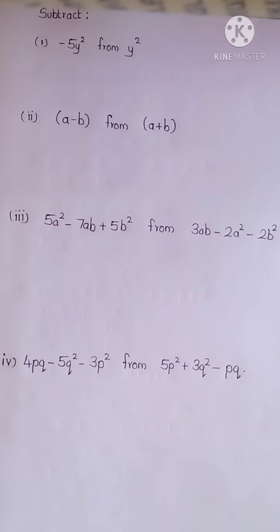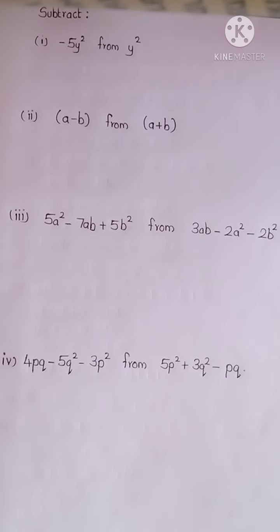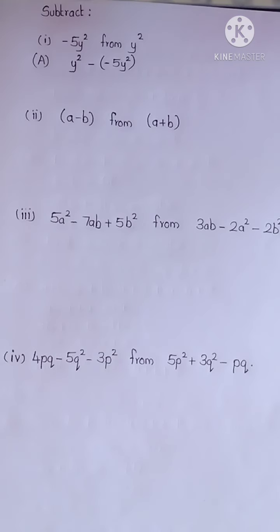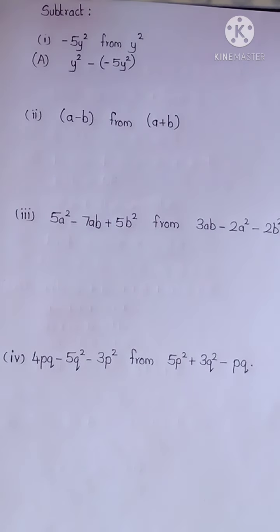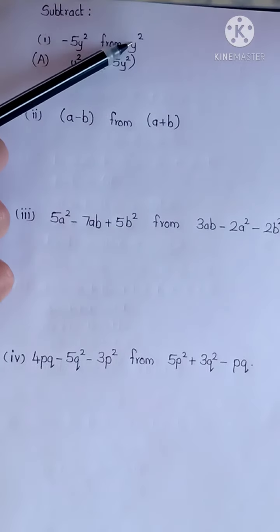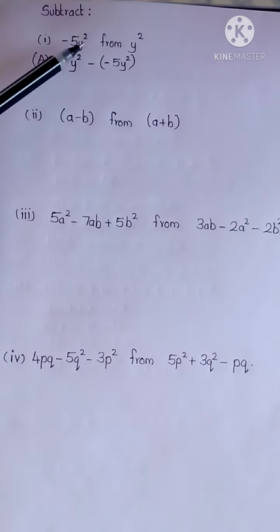First, write the algebraic expression for this statement. Now you can see I have written the algebraic expression for the following: y square minus negative 5y square.